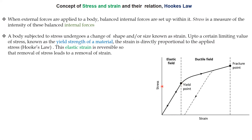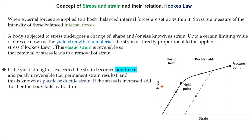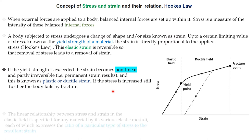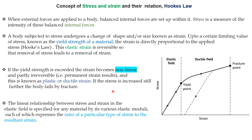If the yield strength is exceeded, the strain becomes non-linear and irreversible — that is called plastic or ductile strain. When we increase the stress further, the body fails by fracture. The relationship between stress and strain in the elastic field can be specified by various elastic moduli, which is the ratio of stress to strain.